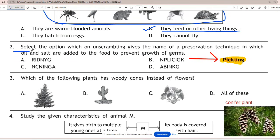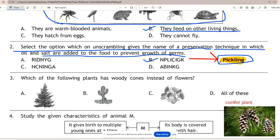Question 2: Select the option which on unscrambling gives the name of a preservation technique in which oil and salt are added to the food to prevent growth of germs. Correct answer is B - pickling. If you rearrange the words you get pickling, it's a preservation method.